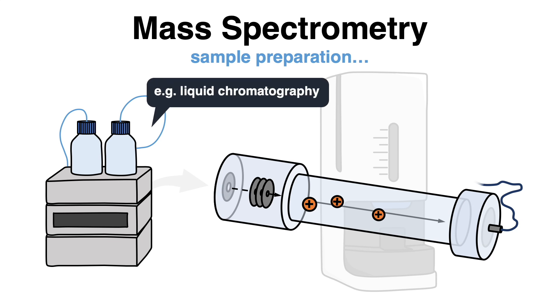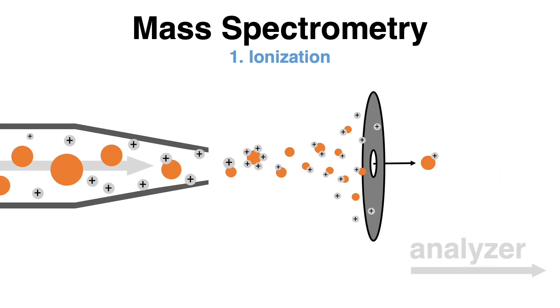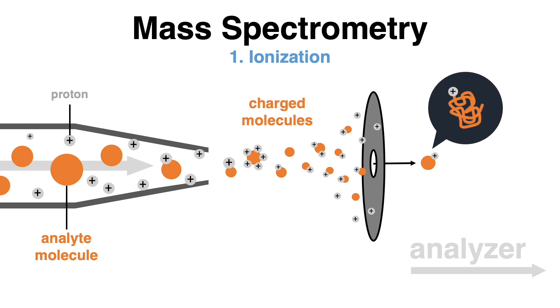The first two steps in mass spectrometry are called desorption and ionization, and they usually occur simultaneously. This refers to the process of transferring molecules into the gas phase, during which singly or multiply charged ions are generated. A common method is called electrospray ionization, short ESI.